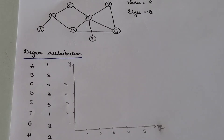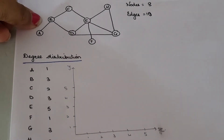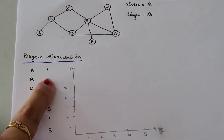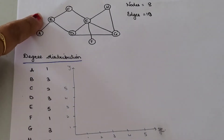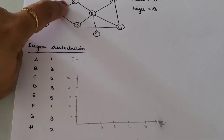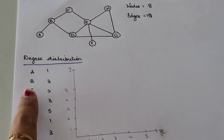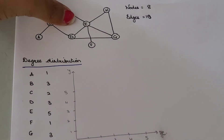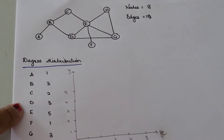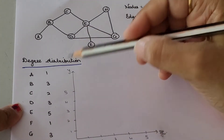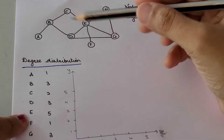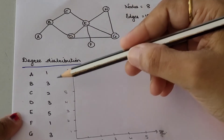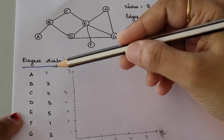For node A, there is only one edge passing from node A, so the degree of node A will be 1. For node B, you have 1, 2, and 3 edges, so the degree of node B will be 3. Node C: 1 and 2. Similarly for node D you have 1, 2, and 3. Node E: 1, 2, 3, 4, and 5. In this way we have calculated the number of edges passing through each and every node.